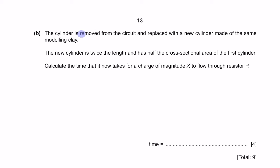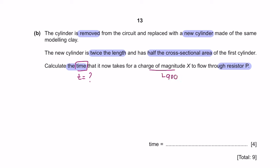Question B: The cylinder is removed and replaced with a new cylinder of the same modelling clay, but twice the length and half the cross-sectional area. Calculate the time for a charge of magnitude X to flow through resistor P. The charge was 900 coulombs. To find the new time, we use Q = It, so t = Q/I. However, the current will change because the resistance of the cylinder has changed.